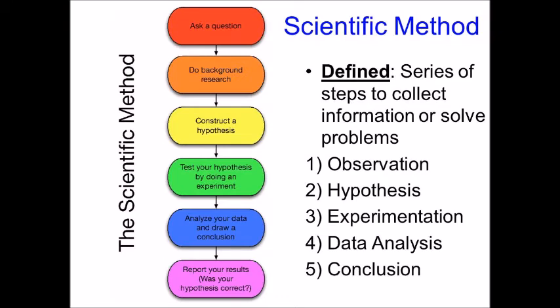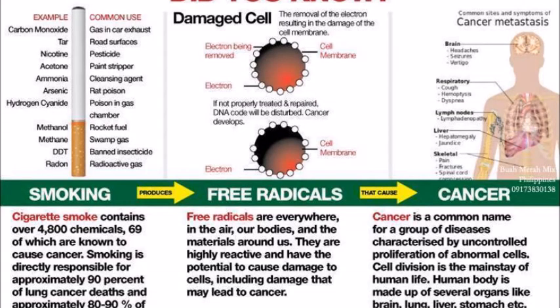Then, the evidence you've gathered should cause you to accept either your null or alternate hypothesis. Did you find a correlation between smoking and cancer? If you did, then you can conclude that smoking causes cancer. If not, then you can conclude that smoking doesn't cause cancer.